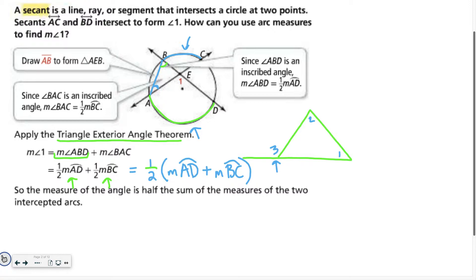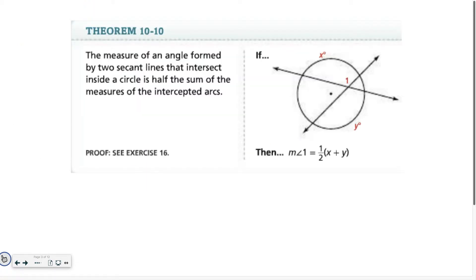This lesson is going to be filled with formulas for you. So let's talk through what some of those things are. Theorem 1010 is what we basically just walked through why it's true. Theorem 1010 is stating that if I add the two arc measures together, multiply by one half, I get these interior angles there, angle 1.